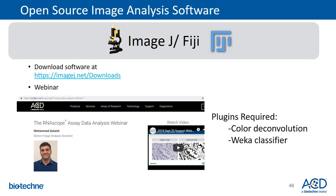There are many different vendors who sell software for image analysis, as well as open source options. The two popular open source software platforms we promote at ACD are ImageJ and CellProfiler. If you would like to get started with ImageJ, also known as Fiji, we recommend using the most recent version. Please go to the ACD website, and under the support tab you will find a link to the ImageJ webinar which walks you through the steps required to perform an analysis of a singleplex chromogenic assay. Please download the color deconvolution plugin and the Weka classifier. There is also a tech note associated with this webinar, and we have added addenda covering how to adjust the ImageJ workflow to analyze duplex chromogenic RNAscope and BaseScope images, as well as how to analyze fluorescent RNAscope assays using ImageJ.